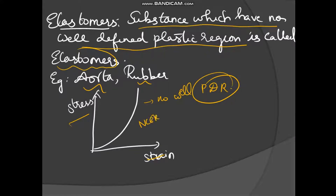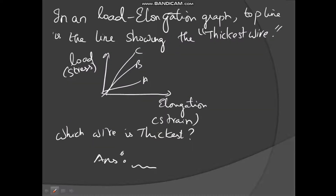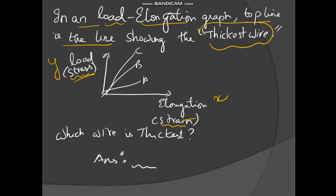In the NCERT exams, questions come only from graphs given in NCERT, so remember those. In a load-elongation graph, load is related to stress and elongation is related to strain. Load is along the y-axis and elongation along the x-axis. The topmost line in the load-elongation graph represents the thickest wire. So if a graph shows multiple wires, the top line — wire C — is the thickest wire.